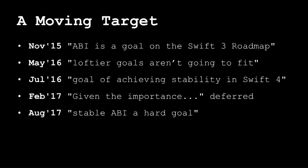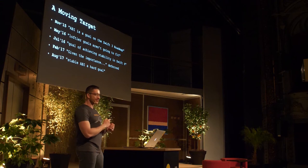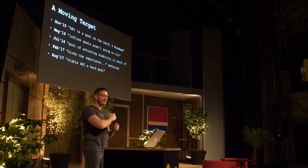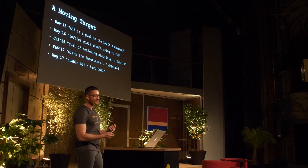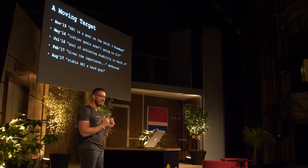Swift's ABI is a moving target. It was first mentioned as a goal in Swift 3 in 2015, and as Swift 3 got closer to the release, it didn't make it. In Swift 4, it kicked off with the goal of achieving binary stability. As it entered phase 2, people reiterated the importance of ABI, and it was deferred.